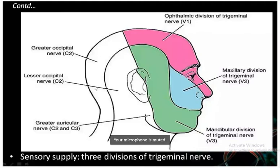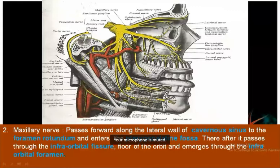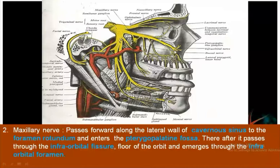V1 carries sensation from the scalp, forehead, upper eyelid, nose, cornea, and conjunctiva. Next, V2 (maxillary nerve) is also pure sensory with functional component as general somatic afferent. It passes through the lateral wall of the cavernous sinus, exits through the foramen rotundum, enters the pterygopalatine fossa, passes through the inferior orbital fissure and canal, and emerges through the infraorbital foramen.